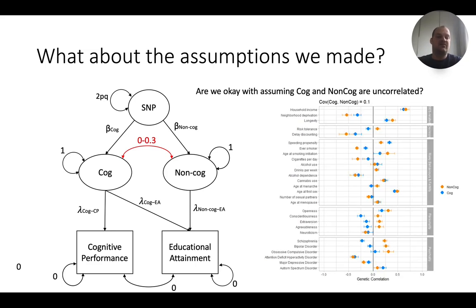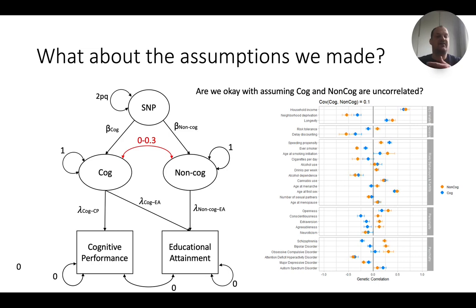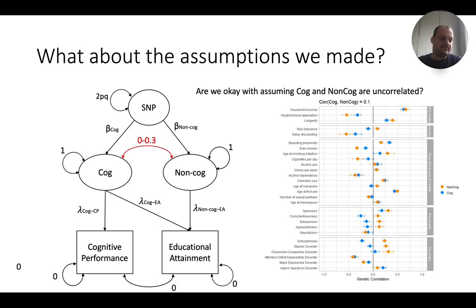What you see is a GIF showing the genetic correlation between non-COG in orange and COG in blue across a whole bunch of traits. Both are highly correlated to household income, but if we change the covariance between COG and non-COG, differences start to emerge. We argue in the paper that the differences are there but not of a magnitude that would dramatically change our conclusions.